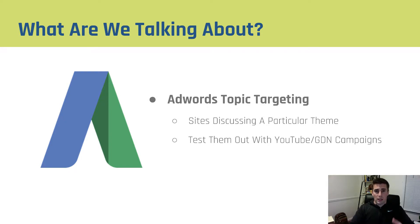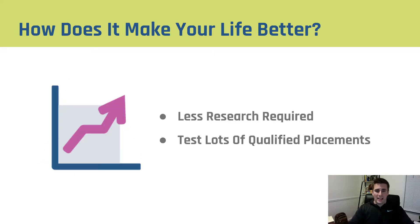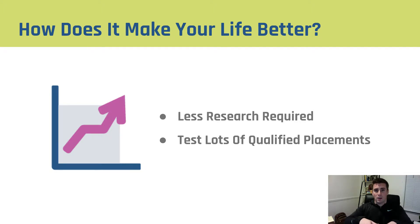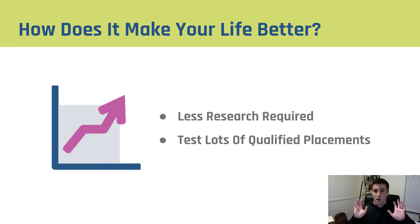The reason we really like topics on AdWords is they allow us to do less research and find more scale. Keyword and placement targeting allow us to make it really clear who we're advertising to, but those are very manual processes — you have to go find all the keywords and all the placements. Topics say this is a general umbrella we're comfortable advertising on, but we don't have to find all the little details. We trust Google to do that for us, plus it gives us more scale.